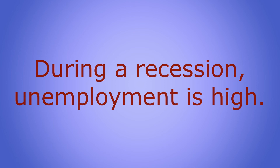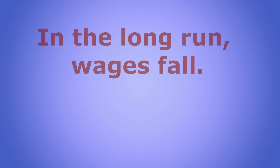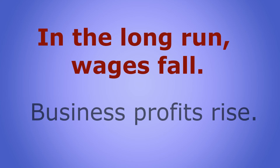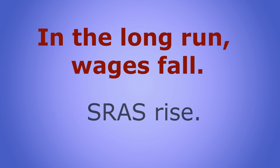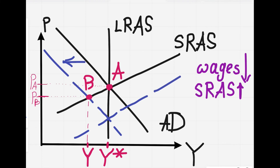Wages is that one thing that will fix an entire economy. When an economy suffers a recession, many people lose jobs, and the unemployed are willing to accept lower wages. So in the long run, wages fall. When wages fall, business profits rise, because businesses paying lower wages earn higher profits. Higher profits make businesses produce more and supply more, so short-run aggregate supply rises and the SRAS curve shifts to the right. The economy moves from point B to point C. From B to C, prices fall and GDP rises — the economy recovers and restores its potential output. Point C is the new long-run equilibrium.